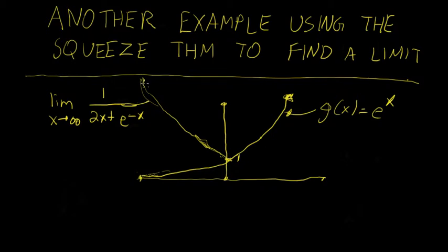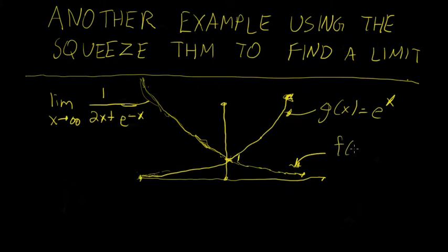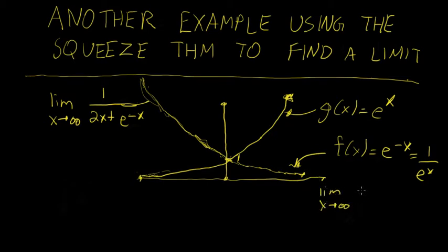Imagine this is a smooth curve rather than a bunch of squiggles. But as e to the x increases exponentially, 1 over each of those y values is going to be something very close to 0. This is f of x equals e to the negative x, which is the same thing as 1 over e to the x. So hopefully you can see that the limit as x approaches infinity of e to the negative x is equal to 0.